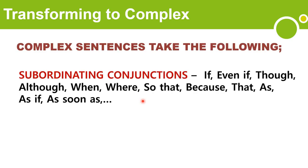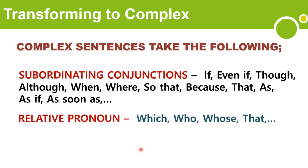When making a complex sentence, there are subordinating conjunctions involved: if, even if, though, although, when, where, so that, because, as, as if, as soon as. Also, relative pronouns such as which, who, whose, that, etc. Relative pronouns are called so because they relate to some noun before them. These can also function as subordinating conjunctions in complex sentences.